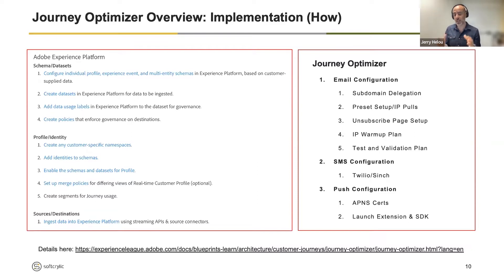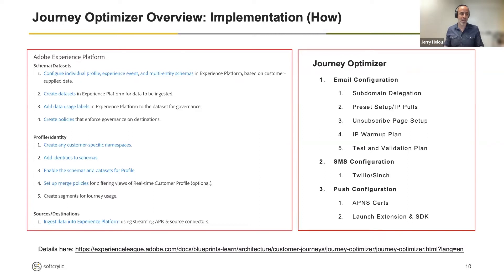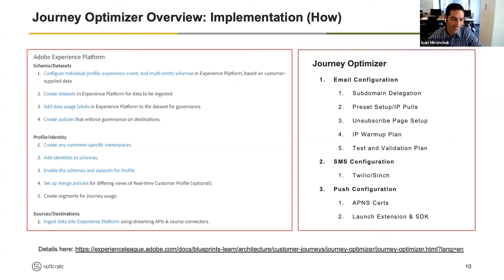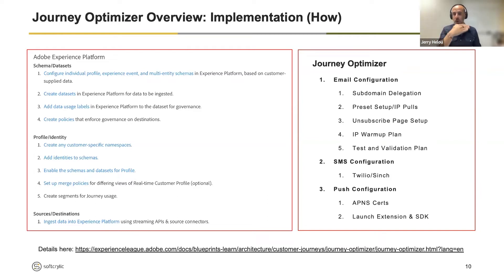In our case, we wanted to use Journey Optimizer to trigger push notifications — I really didn't want another system doing push notifications; I wanted to centralize it. To do that, we went through the regular steps of getting the certification for iOS and Google, making sure we had the configuration, and setting up the mobile app SDK — which in our case we used through what used to be called Launch, now called Data Collection — and within there there is a Journey Optimizer extension that needs to be set up.